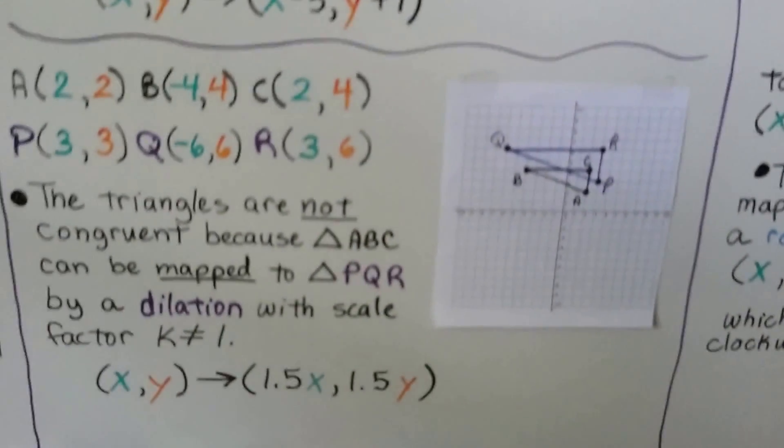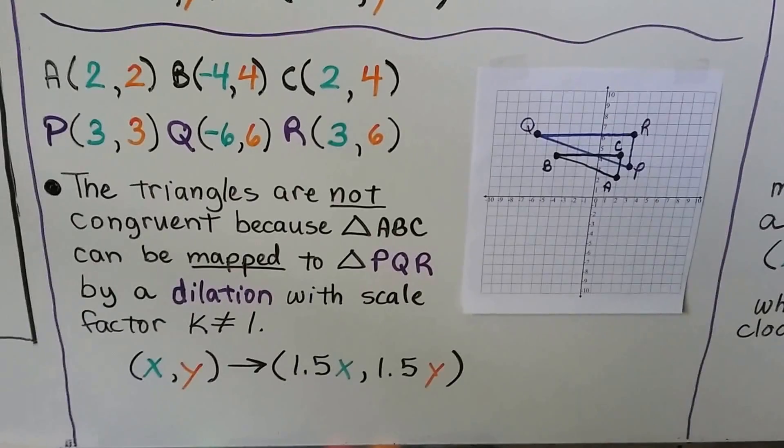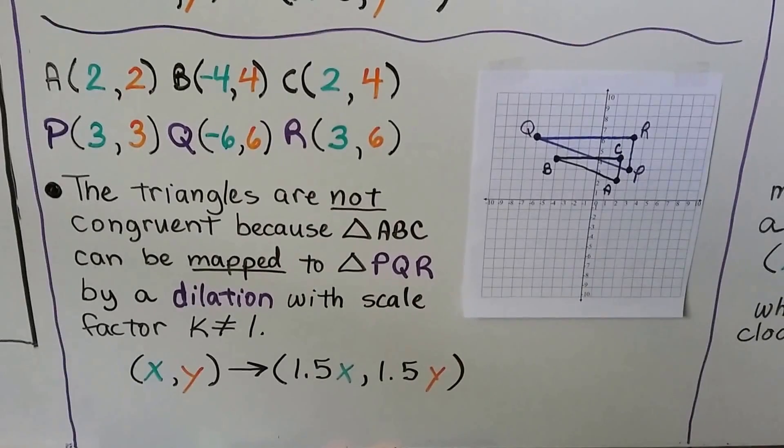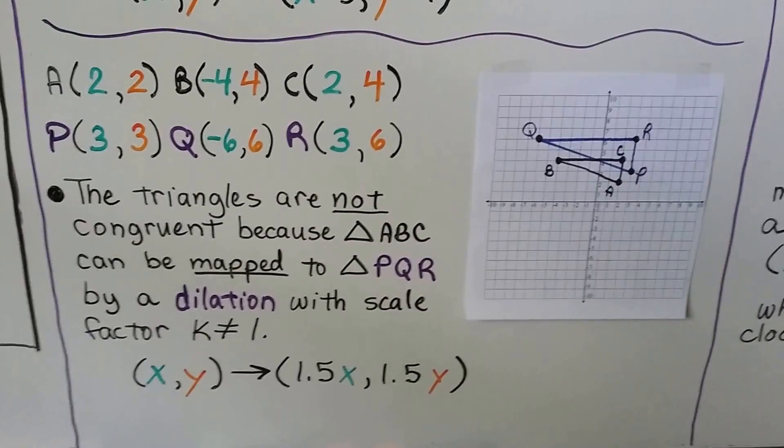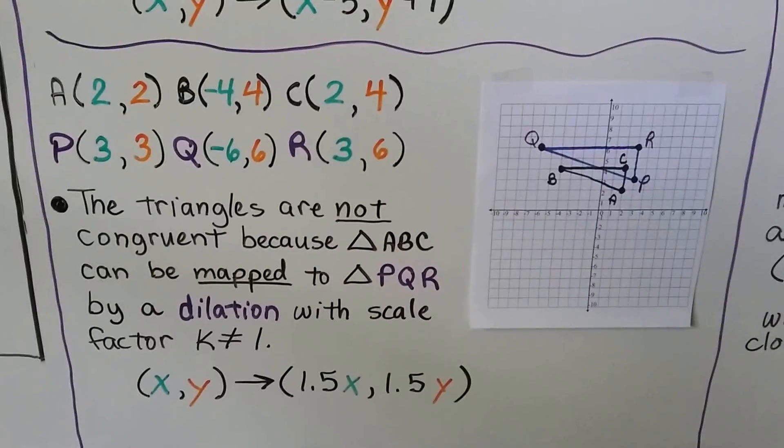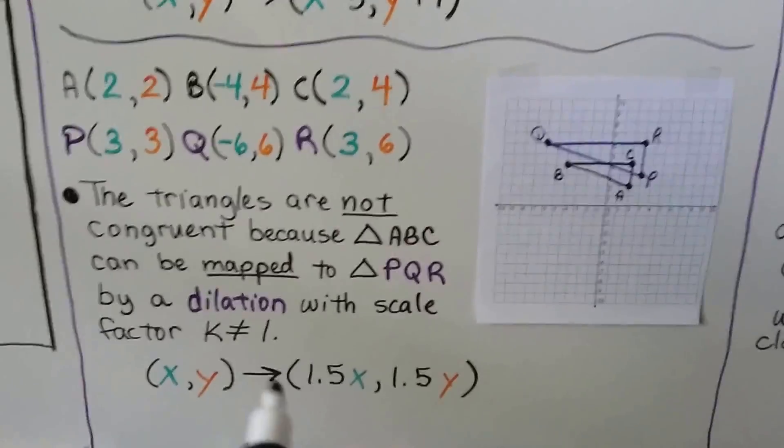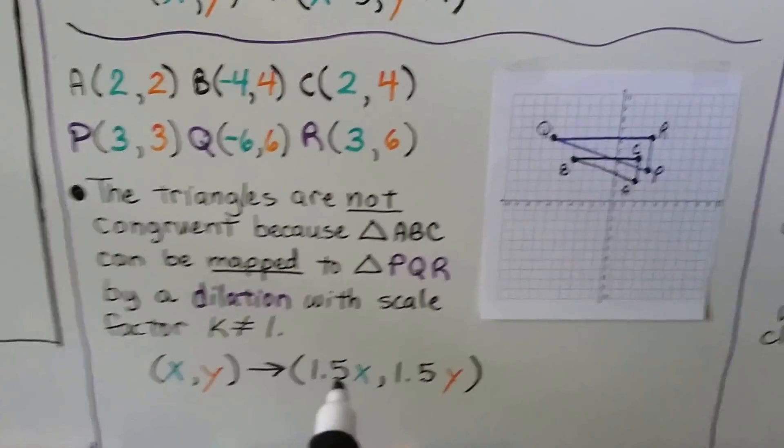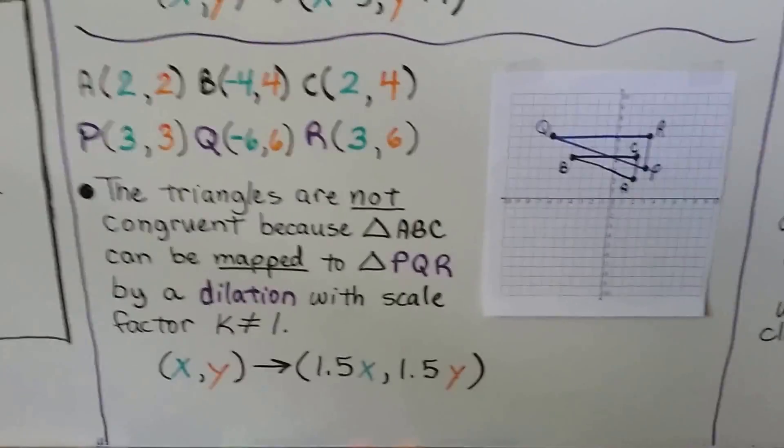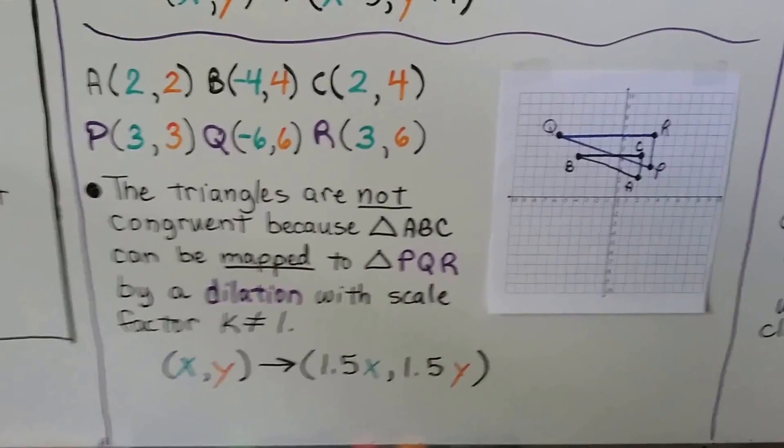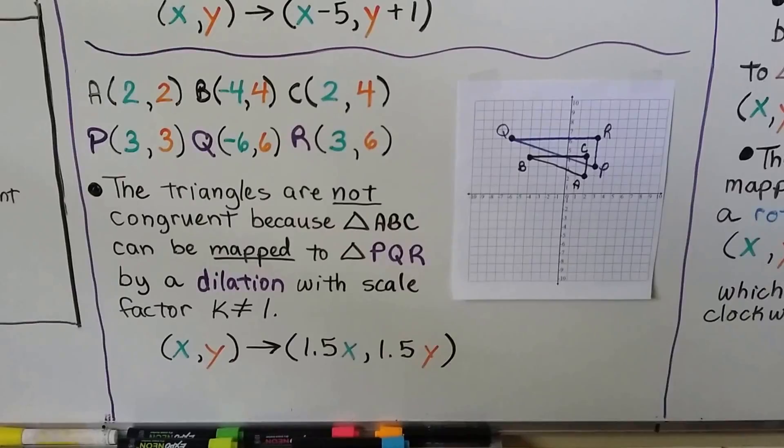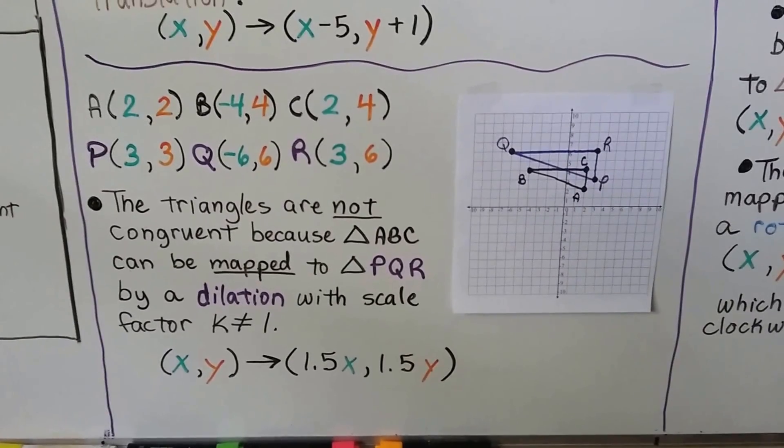Now we have triangle ABC and triangle PQR, and the triangles are not congruent because triangle ABC can be mapped to triangle PQR by a dilation with a scale factor that k is not equal to 1. So in this case, if you look at maps, that k is 1.5. So it grew 1 times 1.5. It multiplied. 1.5 is what k equals. So that was a dilation. They're not congruent. They're two different sizes, aren't they?